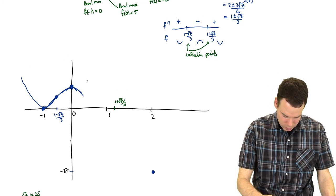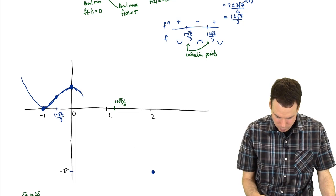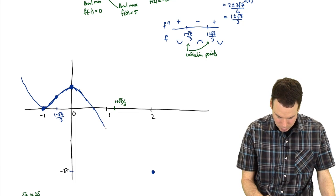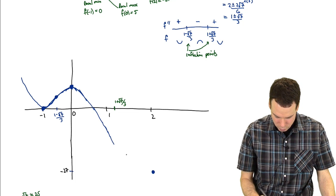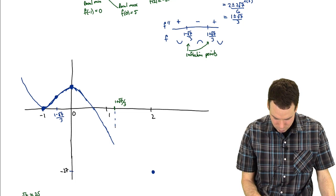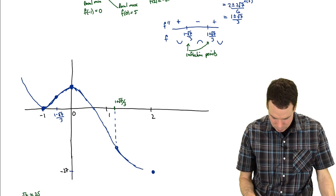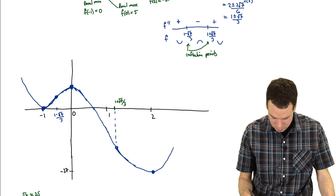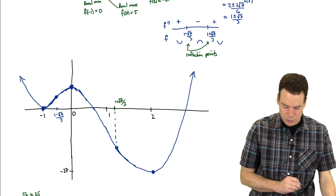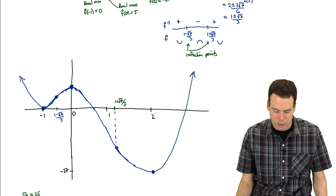It comes down, crosses, and switches from concave down to concave up precisely here. Now it's concave up, hits the minimum, and then takes off. There's our rough sketch of our graph.